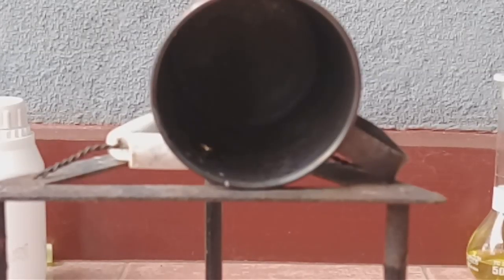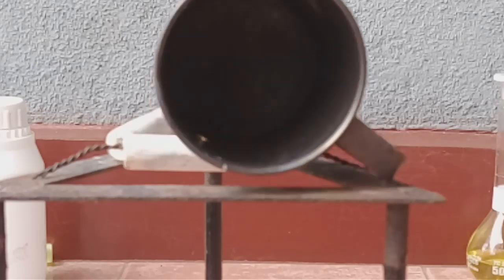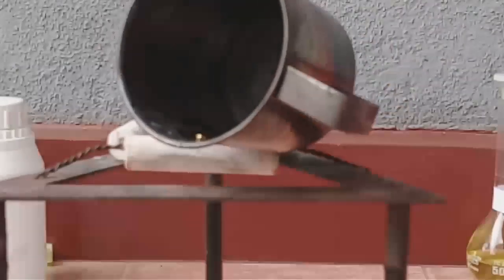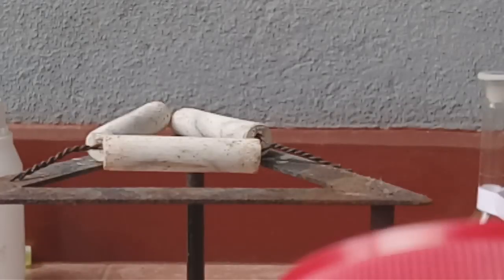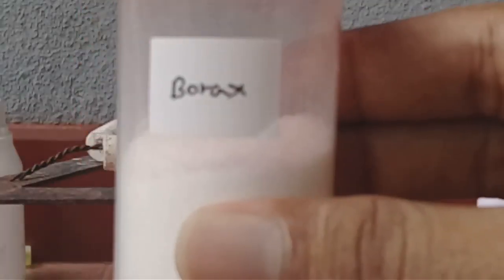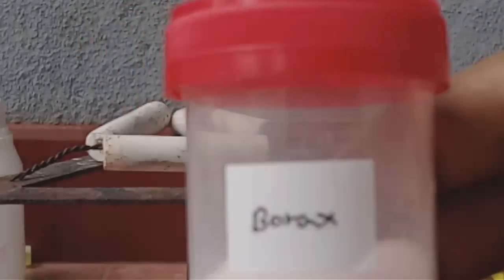Now all the reaction is done. You can see here nice color gold crystal. Before the heat I added some borax to this gold precipitate. It helped to melt down this gold in low temperature.